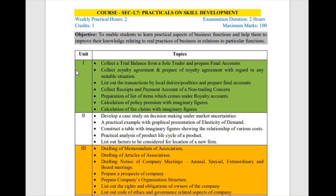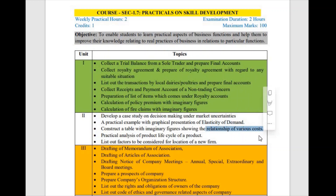The second unit has questions from the MBCA subject — market behavior and cost analysis — where they have given decision making under market uncertainties, elasticity of demand, various relationships of costs such as average cost, marginal cost, and total cost. Also included is practical analysis of the product life cycle, which is very important in marketing management and MBCA. Location of a new firm and product life cycle are compulsory questions they will definitely ask. Elasticity of demand under different market uncertainties and the relationship of various costs may be asked for five or fifteen marks.